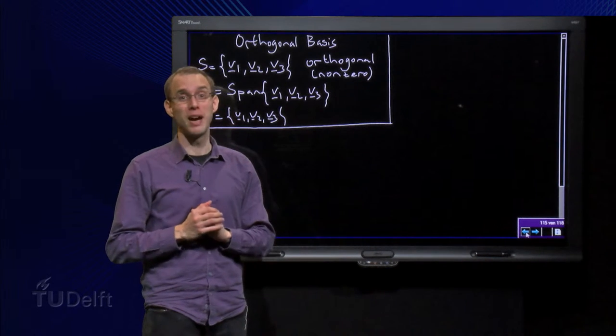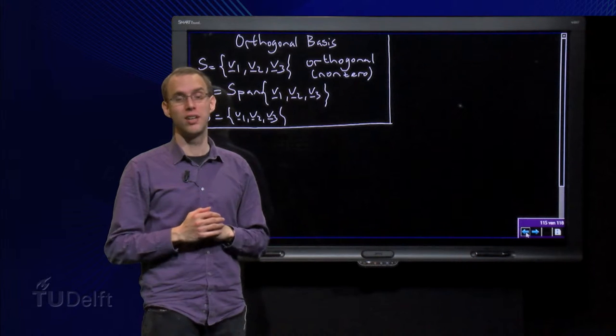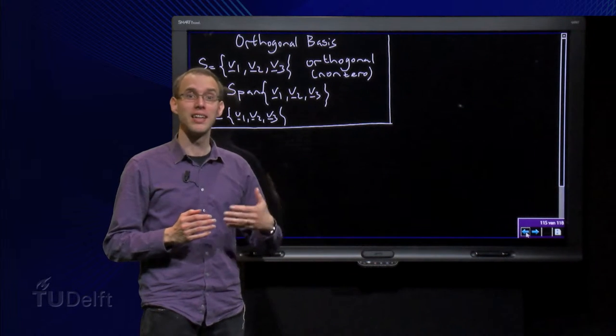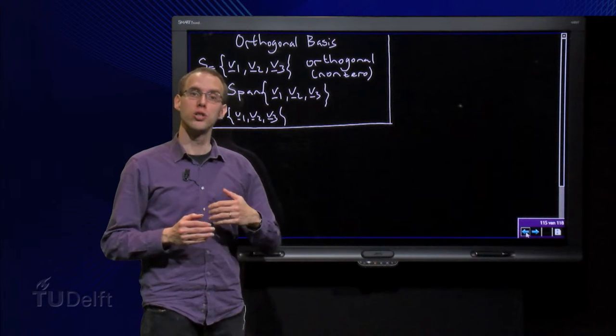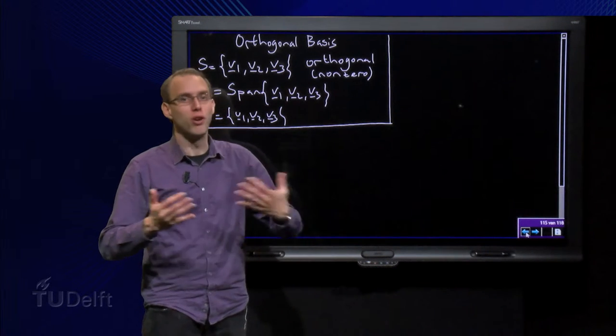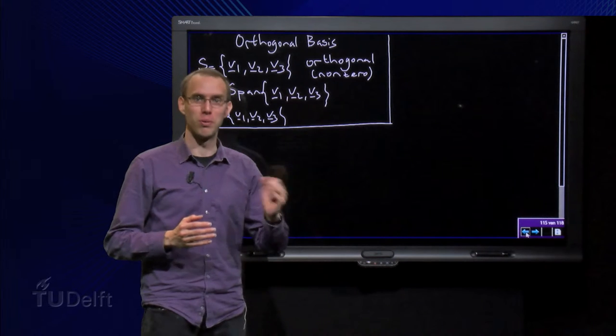In the case however, where S is an orthogonal set, we do not need to do that. S is automatically a basis for H. Such a basis is called, not very originally, an orthogonal basis.